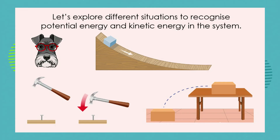I want us to look at different situations and recognize potential energy and kinetic energy in a system. Over some of our upcoming lessons we're going to break down potential energy and kinetic energy in a lot of detail. All I need today is to get you to recognize and look at a system and say: that's when the energy is potential and that's when the energy is kinetic. Potential — stored energy, about to move. Kinetic — moving energy.